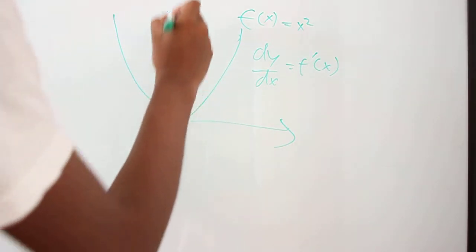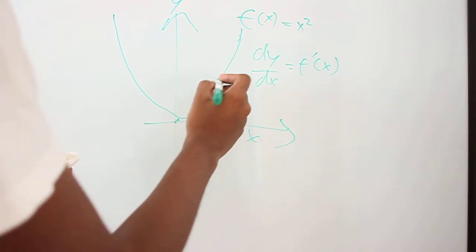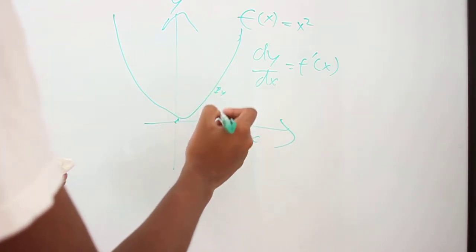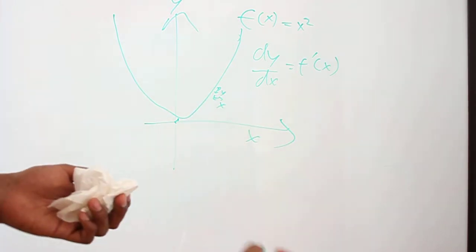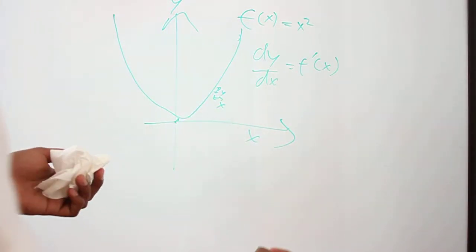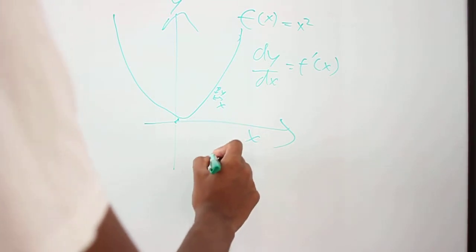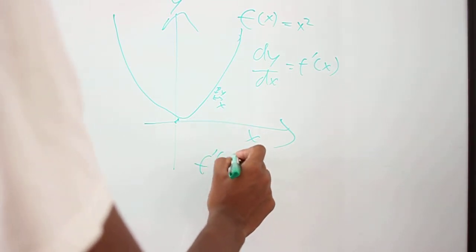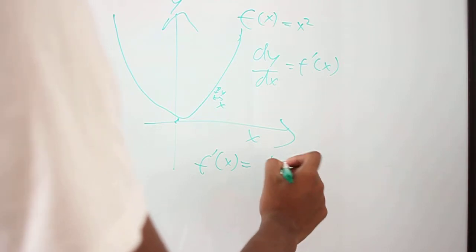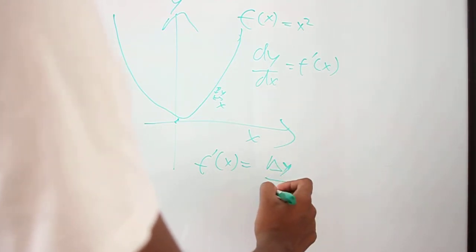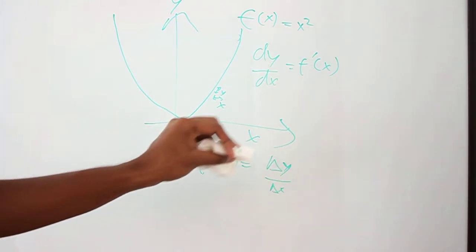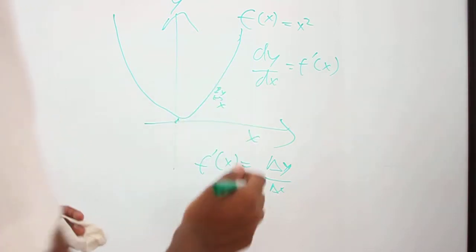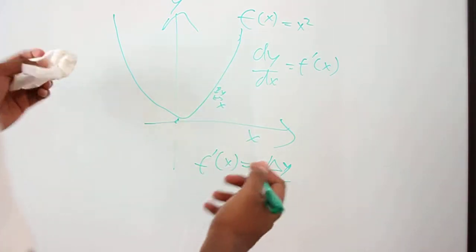So it means how much of y changes as some amount of x changes. So if you want to write the actual definition of a derivative, it would be f'(x) is equal to the change in y over the change in x. But that's not exactly what a derivative is, because although that is the rate of change at some point, it is not the rate of change of the whole function.